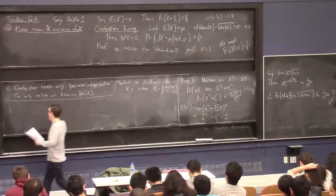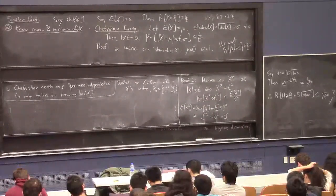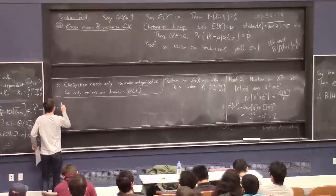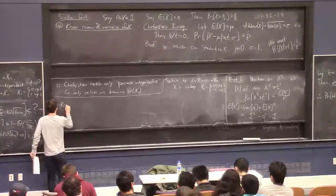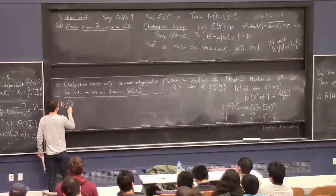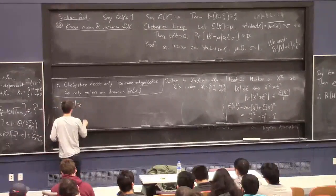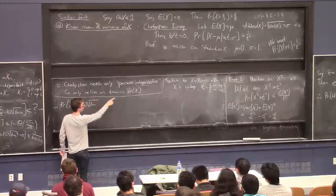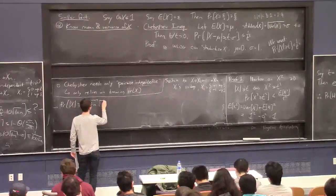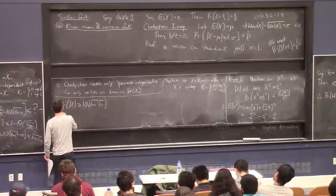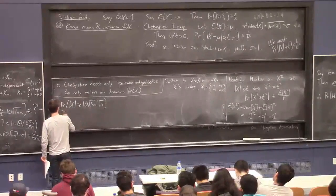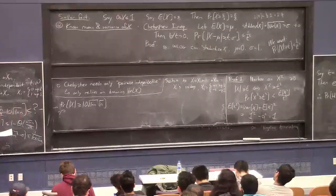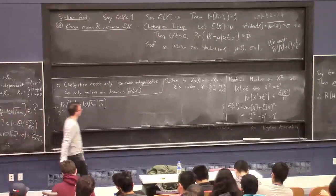Let's try to do this picture thing again. The thing we care about is exactly the probability that this random variable x, in absolute value, is at least 10 root ln n standard deviations. The standard deviation of x is root n. So we're still trying to upper bound this.